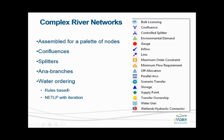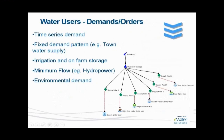First we need to create the demands using water users and minimum flow and environmental demands. These demands will be supplied by the storages. Types of demand include time series demand — there are a number of demand models within a water user. A fixed demand pattern. Irrigation — there are a couple of different irrigation demand models. Minimum flows are in a separate node and the environmental demand model is also in a separate node.